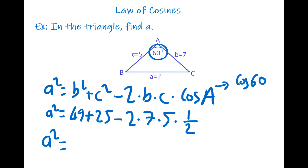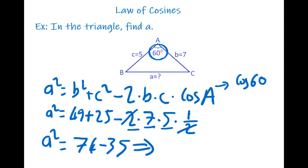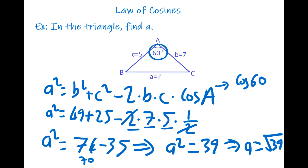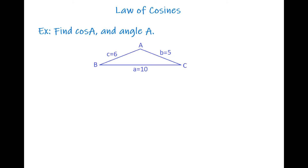Adding 49 and 25: 50 plus 25 is 75, but 49 is 1 less than 50, so we get 74. Then we simplify: 2 times 7 times 5 times one-half gives 7 times 5 which is 35. So a squared equals 74 minus 35 which is 39. Taking the square root of both sides, a equals the square root of 39.